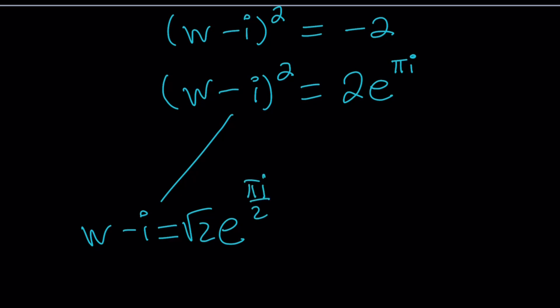By the way, you could also write it as i pi, but pi i and i pi are the same. This is just one of the square roots. And the other square root is just going to be, you're going to be adding pi to this. And it's just going to give you the pi over, you can add pi to pi over 2. That's going to give you 3 pi over 2. With the same modulus, e to the power 3 pi i over 2.